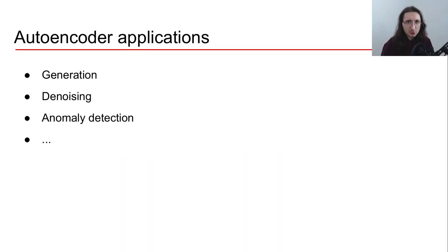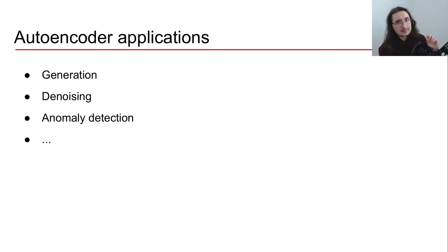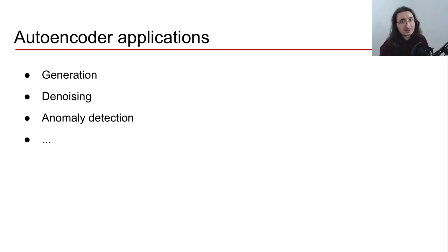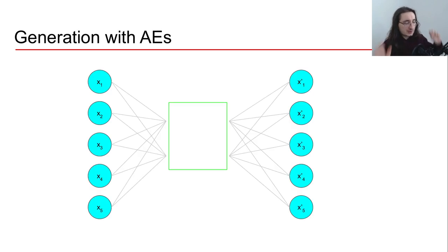We can use autoencoders for three main applications: generating data — which is exactly what we'll do in this series on sound generation with neural networks; denoising data, such as denoising images or sound; and anomaly detection, for example detecting malfunctions in a machine. There are other applications too, but let's focus on these.